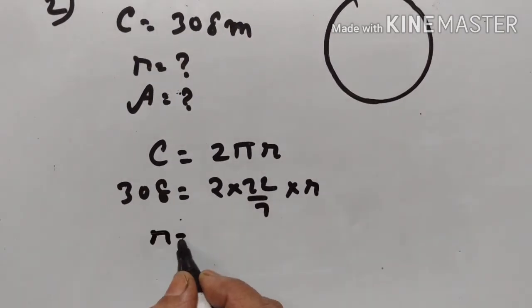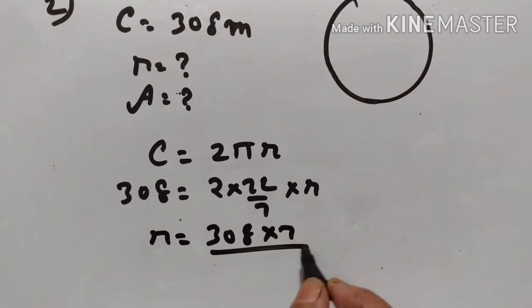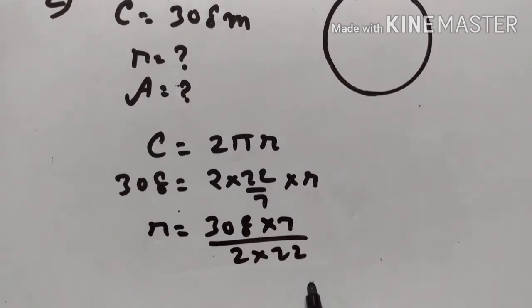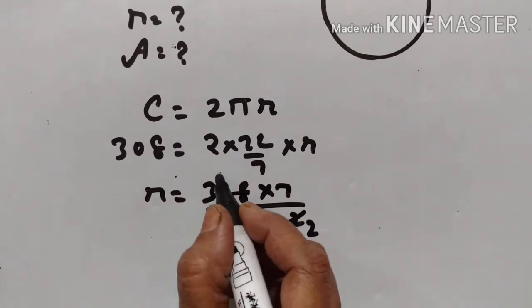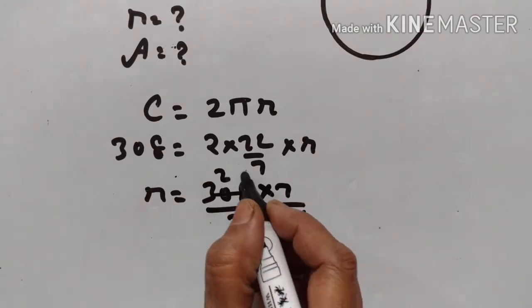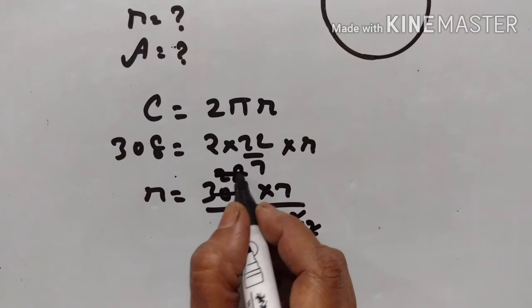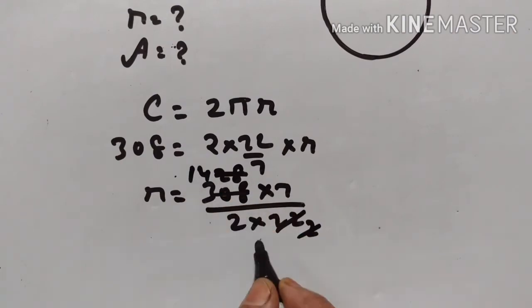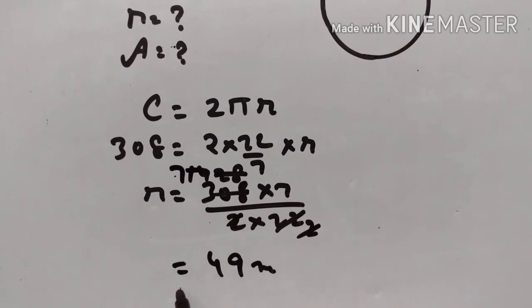So radius is equal to 308 × 7 divided by 2 × 22. Simplifying: 49 meters is the radius.